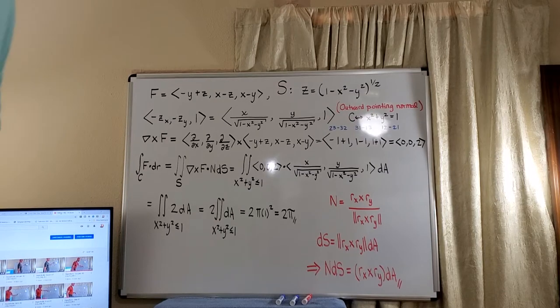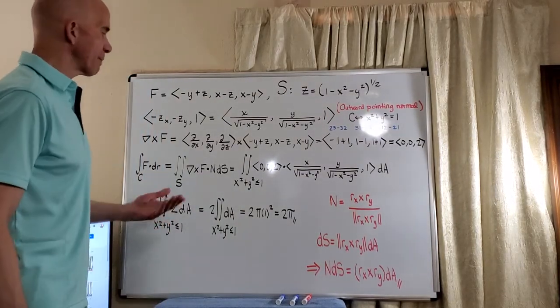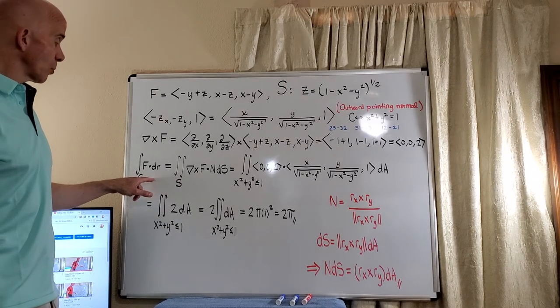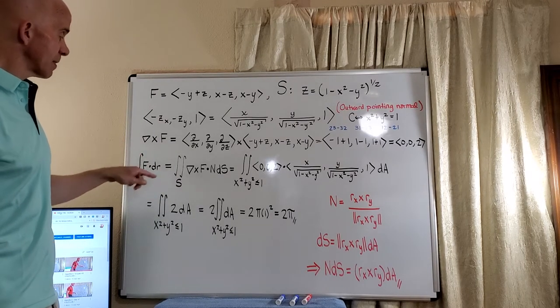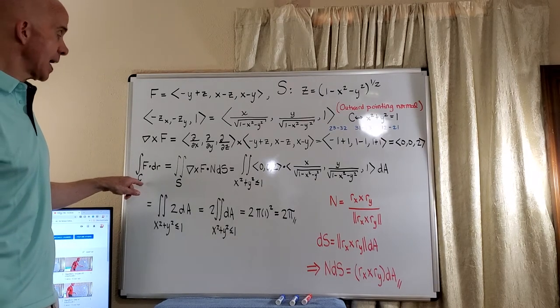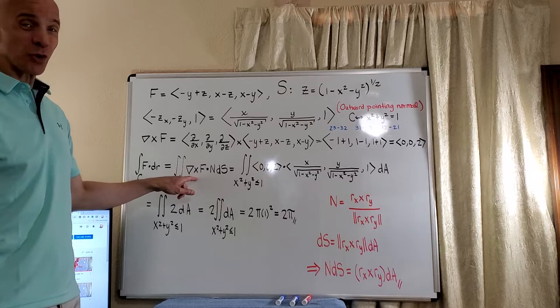Let's look at an application of Stokes' theorem. The Stokes' theorem basically allows us to replace a line integral where we have the positive orientation, that is the counterclockwise traversal of C, with a surface integral of the curl of F.